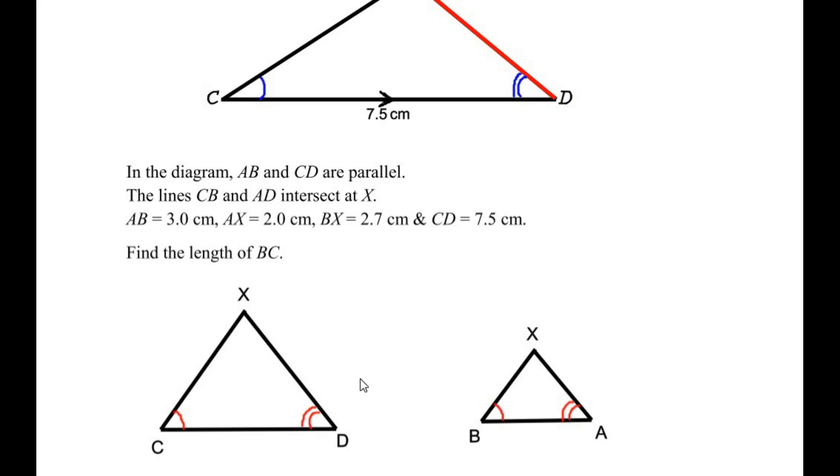We can see that the two triangles are similar to each other by angle-angle criterion. Now let us write down the respective values of each side. AB is 3 centimeters, CD is given as 7.5, AX is given as 2 centimeters, and BX is 2.7 centimeters.